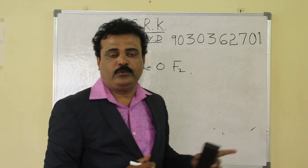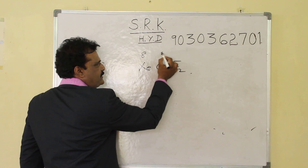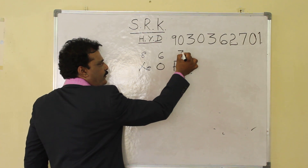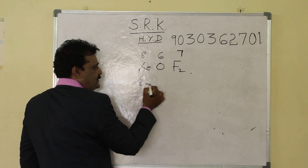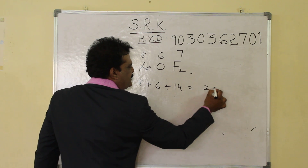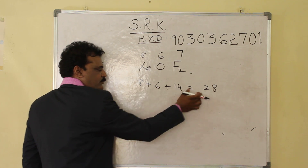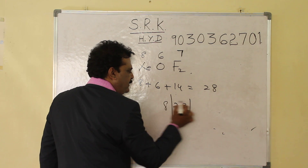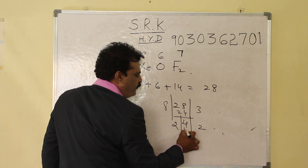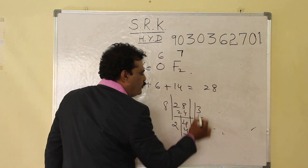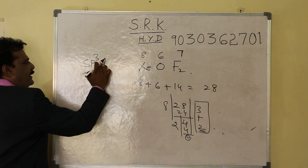Now for XeOF2: xenon belongs to group 8, oxygen belongs to group 6, and fluorine is a halogen belonging to group 7. Xenon's total: 8 plus 6 plus 14 equals 28. 28 divided by 8 gives 3 with a remainder of 4. Divide the remainder 4 by 2 to get 2. Total 3 plus 2 equals 5, so hybridization is SP3D.